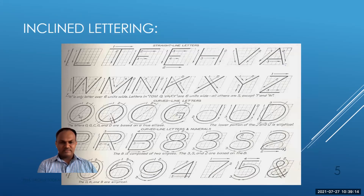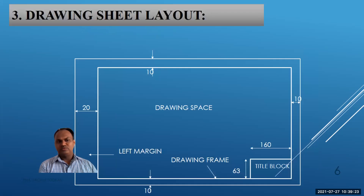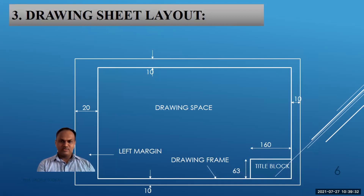Inclined lettering is not going to be covered in detail since it is not currently in practice in engineering. Now, this is the actual drawing sheet layout. We have to keep distances of 20 mm on the left side and 10 mm from all other sides. The title box will be 160 mm by 63 mm. The inner area is called the drawing space and the border is called the drawing frame.